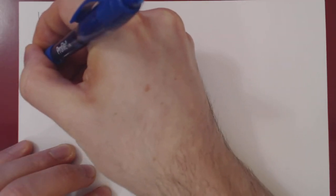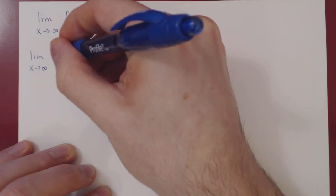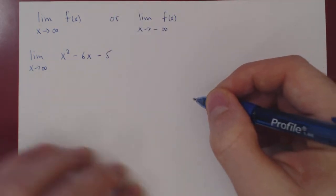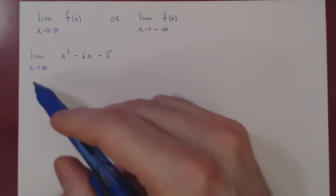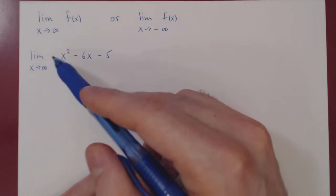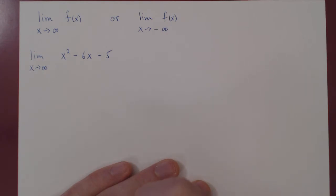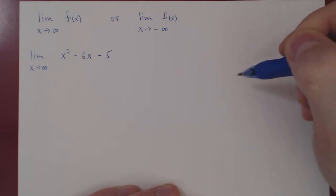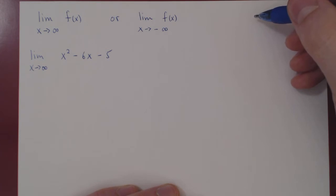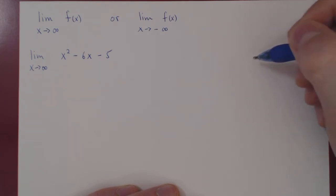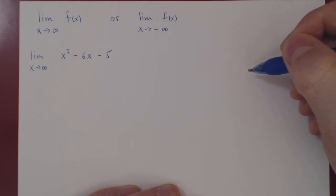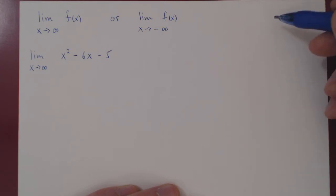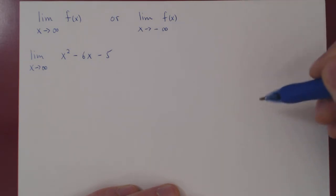The limit as x goes to positive infinity of x squared minus 6x minus 5. Using our intuition, when we consider powers of x and let x approach positive infinity, the only power that matters is the larger power. Think of x, x squared, x cubed, and so on. Just take x equals 10: you have 10, 10 squared is 100, 10 cubed is 1000, 10 to the 4 is 10,000, 10 to the 5 is 100,000. The greater the power, the greater the numerical value.